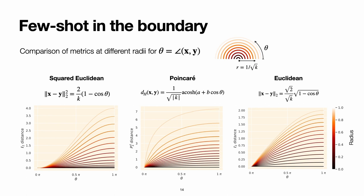However, if we compare the Poincaré metric in the center with the Euclidean one on the right, we also see that the latter becomes a good approximation of the hyperbolic distance.